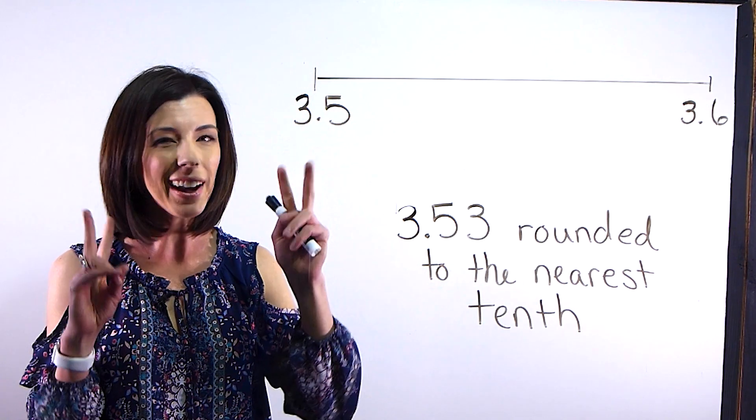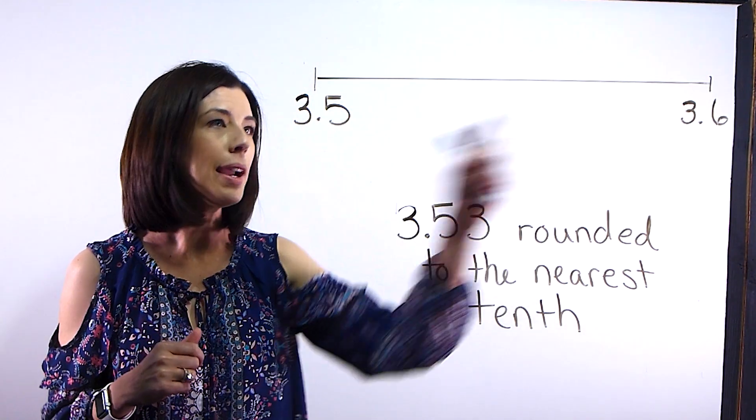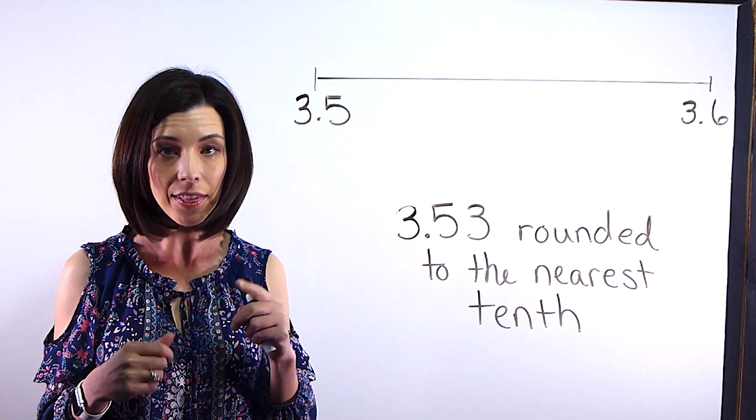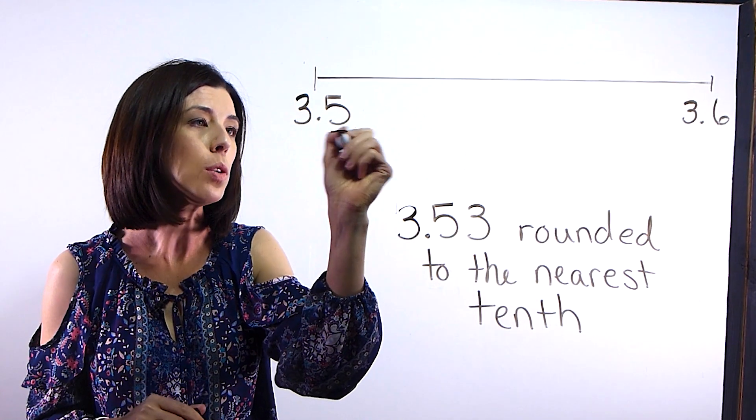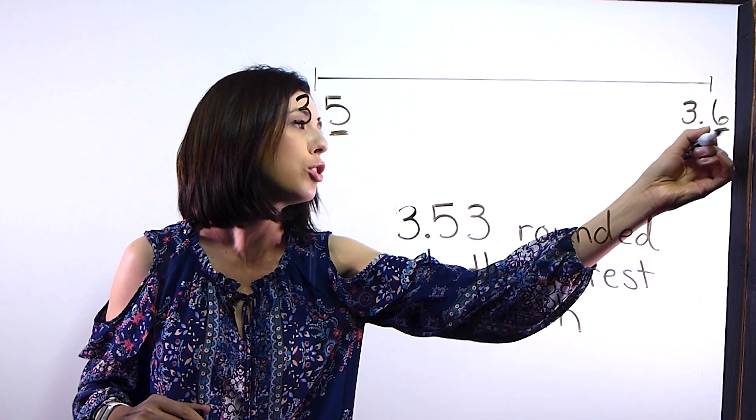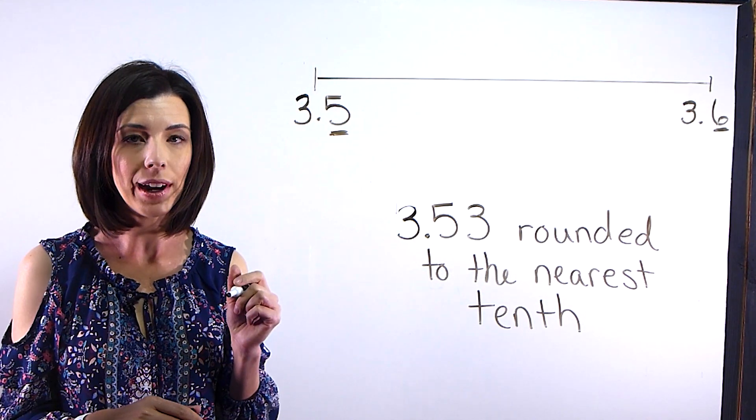I've decided to, I call it jumping, hop on my number line 1 tenth. So that's the first thing is you need to make sure that you are only jumping a tenth on your number line.